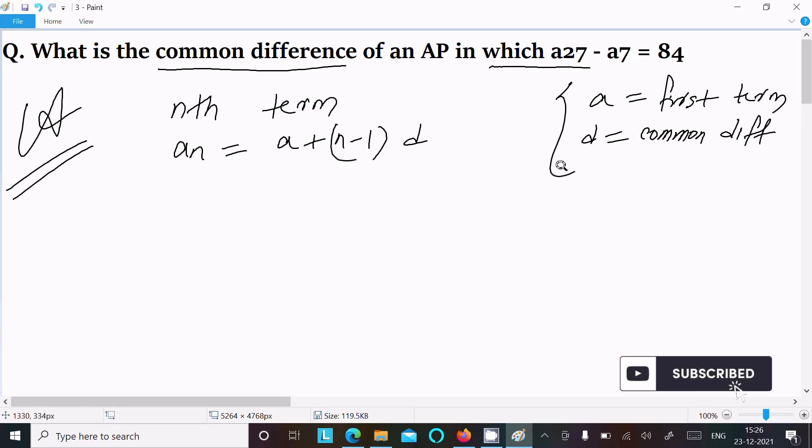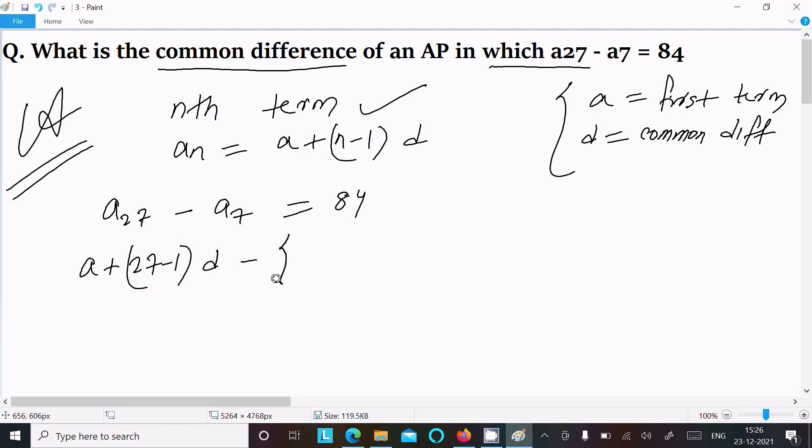So here a27 minus a7 equals 84. So put here a27, which is the first term a plus 27 minus 1 times d, minus a7, which is a plus 7 minus 1 times d. That is equal to 84.